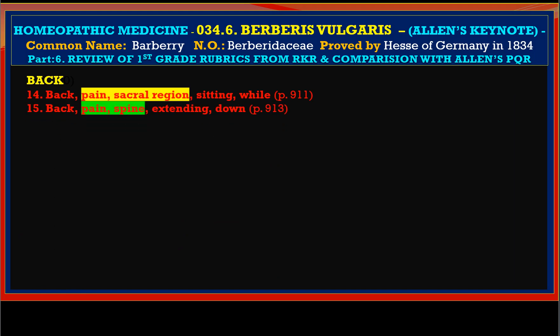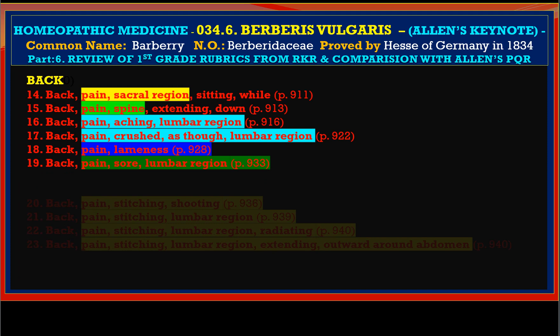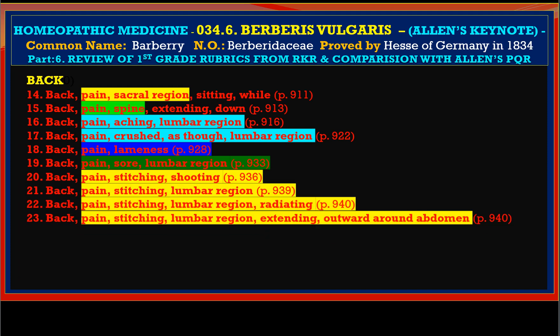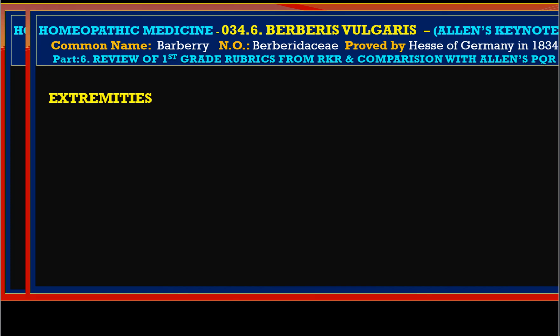Going back again to the back: pain sacral region, pain spine extending down, pain aching lumbar region, pain crushed throughout lumbar region, pain lameness, pain sore lumbar region, pain stitching in lumbar region. Radiating and extending outwards around the abdomen — that is the typical course of renal pain which radiates anteriorly forwards and downwards. Pain stitching spine extending down to the smaller back in the region of bladder. These symptoms represent more or less pyelitis and chronic urinary tract infection, even stones in the kidneys. Tension in the lumbar region is also present.